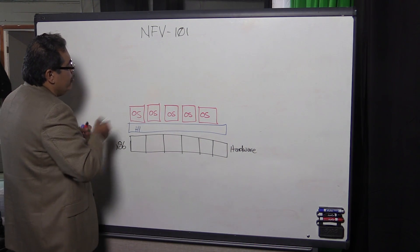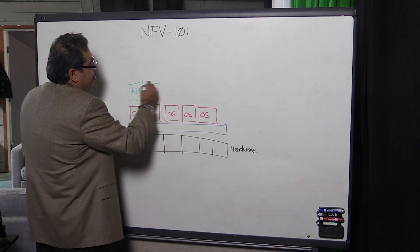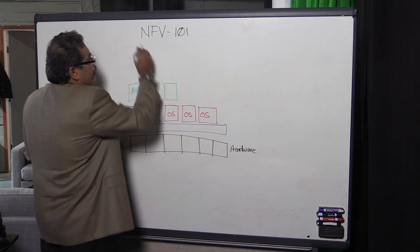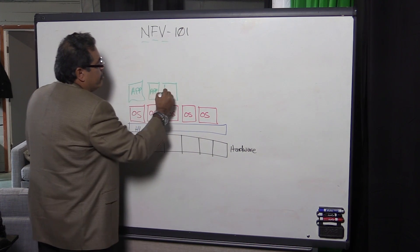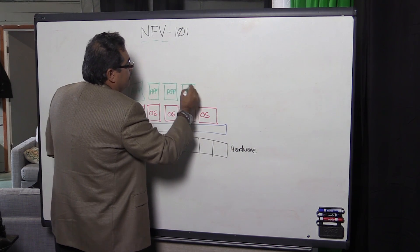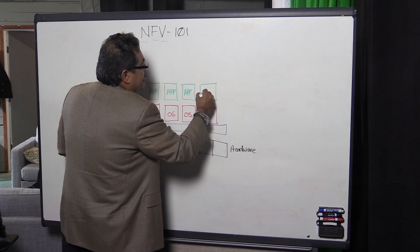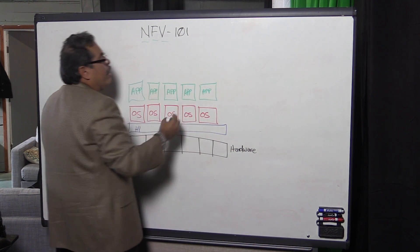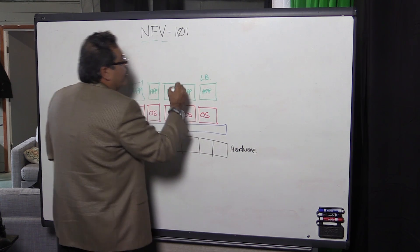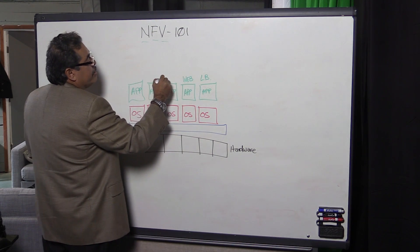So once we do this on top we're able to do what is commonly referred to as network function virtualization. Because the application in this case could be any part of the network. So this app could be a load balancer. So if you have a load balancer or you have obviously a web server or you could have a BSS.